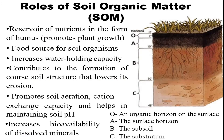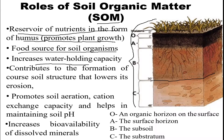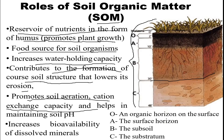Now let's talk about the role of SOM, or soil organic matter. As you can see, there are certain layers of soil — O is the topmost layer and C is the deepest. SOM serves as a reservoir of nutrients in the form of humus that promotes plant growth, acts as a food source for soil organisms, increases water-holding capacity, and contributes to soil aggregate structure, lowering erosion. It also promotes soil aeration, cation exchange capacity, and helps maintain soil pH.